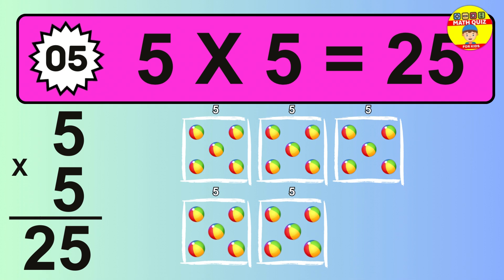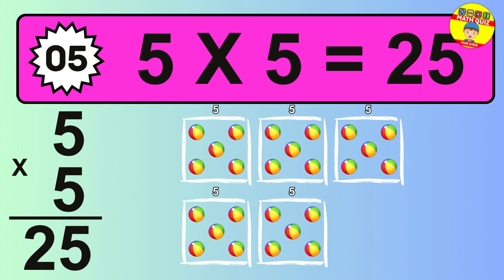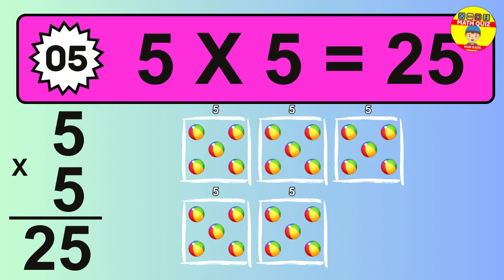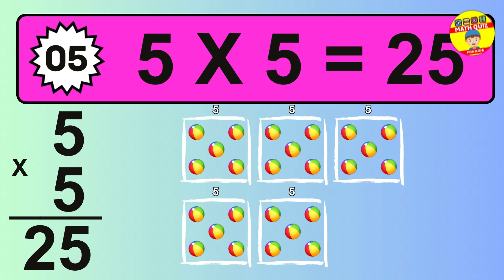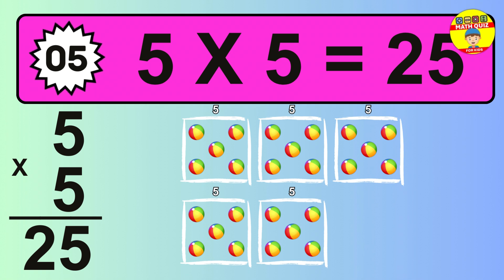The answer is 5 times 5 is 25. To calculate, we have 5 groups with 5 balls each one. So, how many balls do we have? 25 balls.